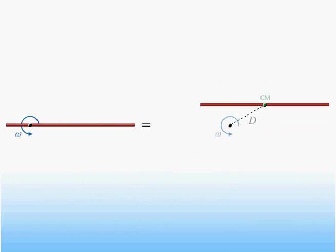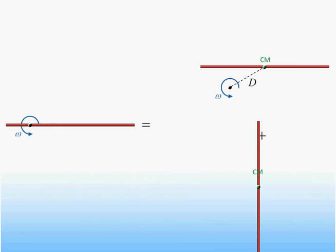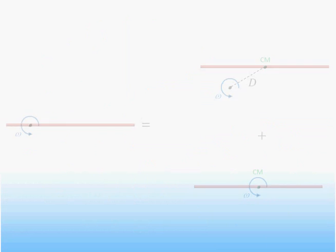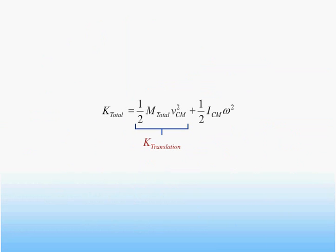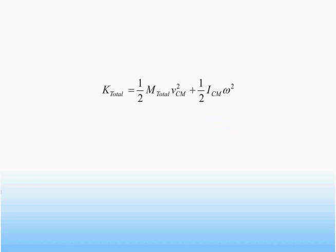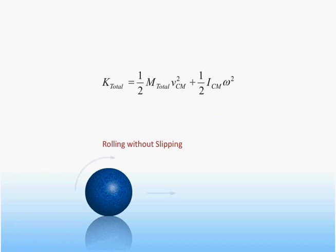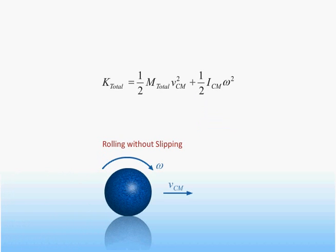We have previously shown that the total kinetic energy of a solid object is just equal to the kinetic energy of the center of mass plus the kinetic energy due to the rotation of the object around an axis through the center of mass. The first term is called the translational kinetic energy, equal to one-half times the total mass times the square of the center of mass velocity. The second term is called the rotational kinetic energy, equal to one-half times the moment of inertia about an axis through the center of mass times the square of the angular velocity. For cases in which the object is rolling without slipping, we can simplify this expression since the angular velocity and the center of mass velocity are related in a very simple way.